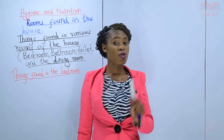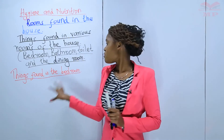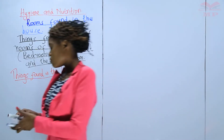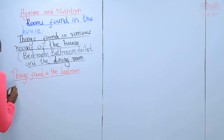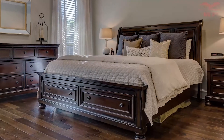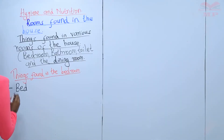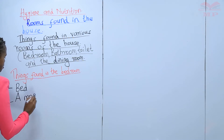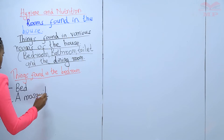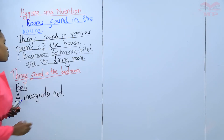A bedroom is a place where we have our sleep or take our naps. The first thing we have is a bed — a bed is found in the bedroom. We also have a mosquito net. That's a picture of a mosquito net.